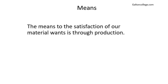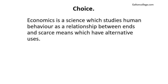Now, the means to satisfy our wants — we do this through production. We may do it through discovery, going out and looking for something, and that's a type of production. But generally speaking, we have to produce the things, and that has to be paid for as well. Now, choice. If you go back to the Robbins definition — that's the Robbins definition we've got on the screen at the moment — it's a science which studies human behaviour as a relationship between ends and scarce means which have alternative uses. Alternative uses — we have to make choices.